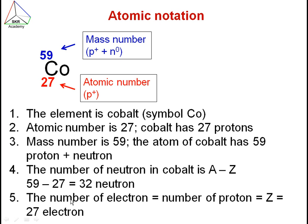One more thing we can get from atomic notation is information about electrons – in the case of a neutral atom, the number of electrons equals the number of protons, which is Z, so cobalt has 27 electrons. We will see some other examples of isotopes and isotopic atoms in the next video. I hope you understand atoms, atomic number, and atomic mass. Thank you.